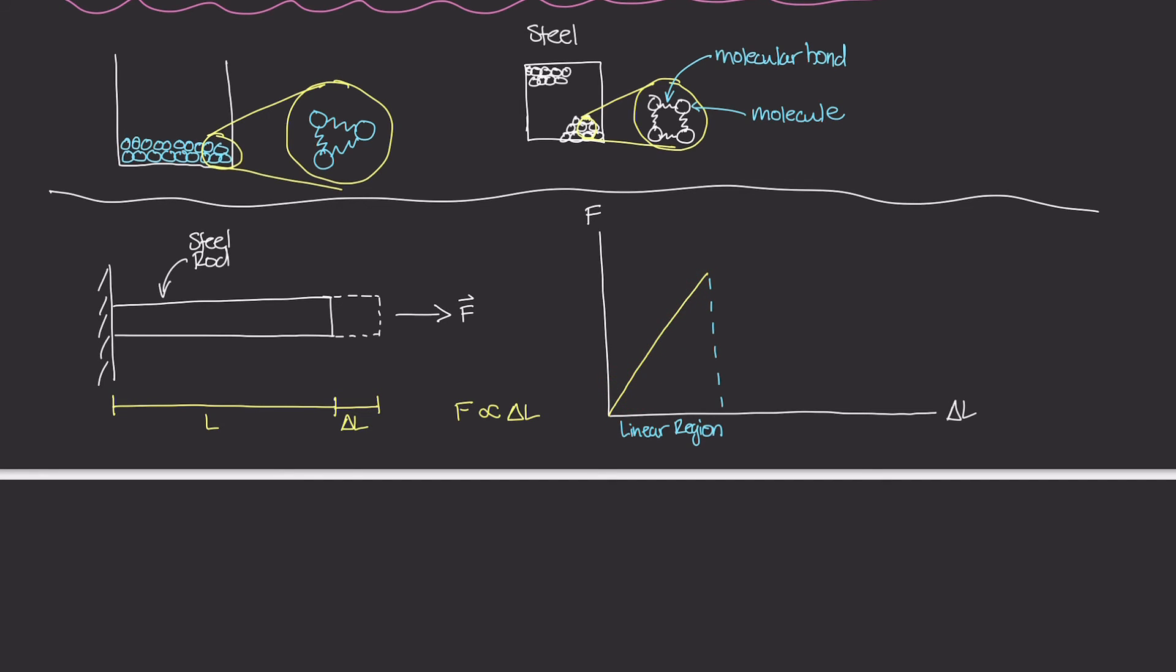Now, if you were to keep going, in other words, if you were to keep pulling this rod, after a certain point, you'll notice that you don't need as much force anymore to move the rod a greater distance. In other words, this distance right here. And if you were to pull the rod even more, now things start getting interesting. Because at this point right here, this is where the rod permanently deforms.